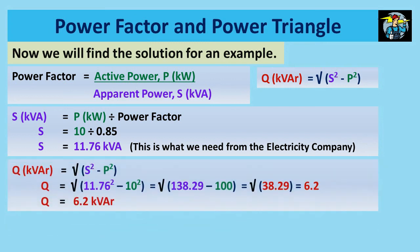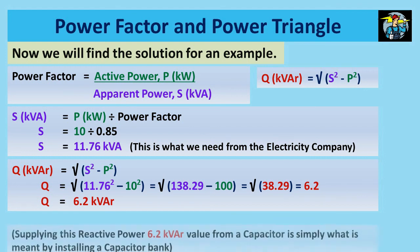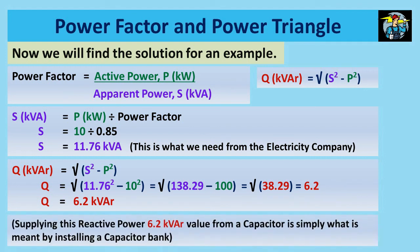To find reactive power Q, we will deduct square of P from square of S first. Square of 11.76 is 138.29, and square of 10 is 100. By subtracting, you get 38.29, and the square root of it is the value of Q. So 6.2 kVAr is the reactive power here in this motor. Supplying this reactive power 6.2 kVAr value from a separate capacitor is simply what is meant by installing a capacitor bank.